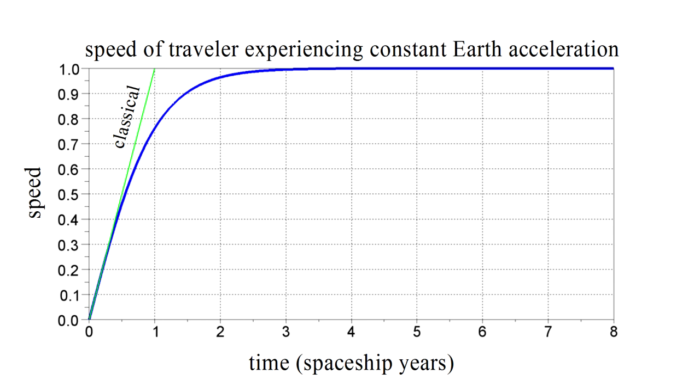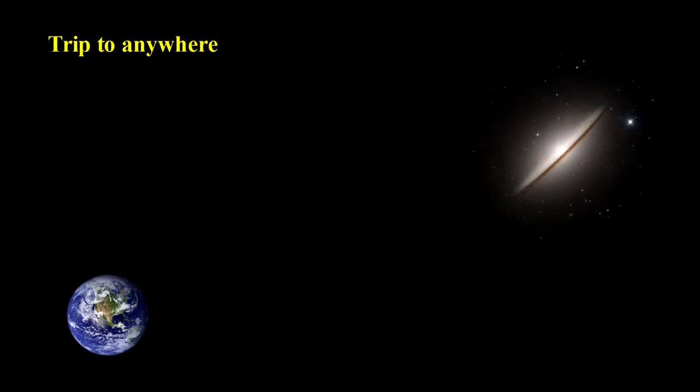This is yet another confirmation that the speed of light is an absolute upper bound for the velocity of an object. Let's now analyze what would be involved in a trip to a distant object while undergoing constant acceleration equal to that of Earth's surface. With Earth as our reference, the distance psi we travel during spaceship time t is coche t minus one. The elapsed Earth time is cinch t.